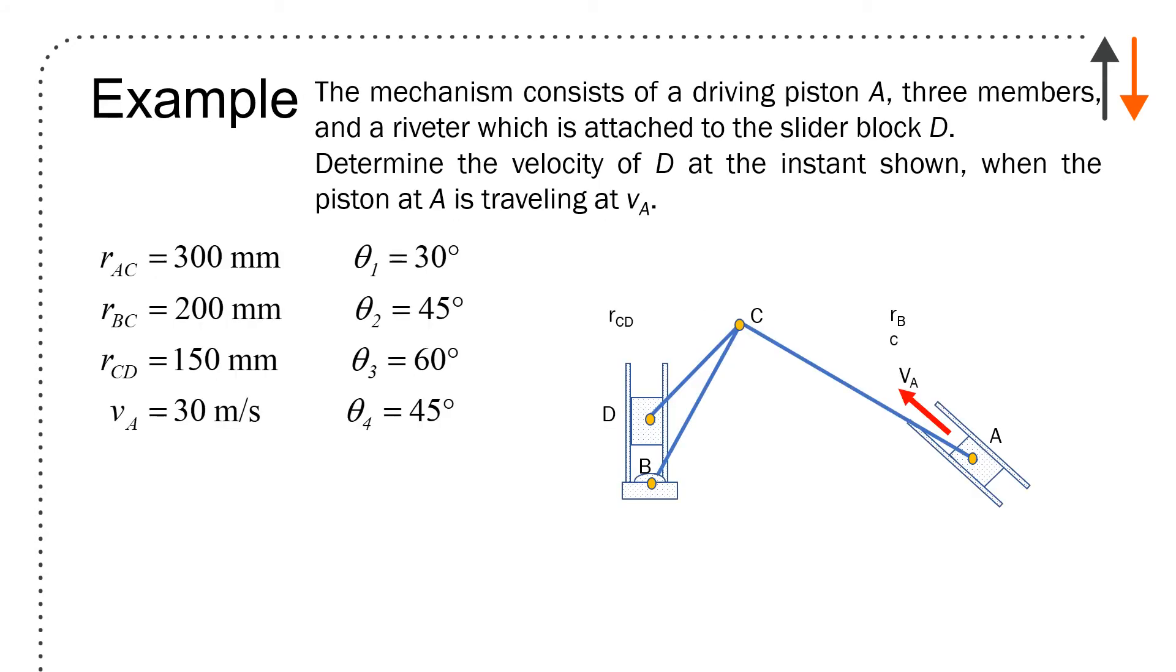This is a much more complex case. I have a mechanism consisting of a driving piston at A, three members, and a riveter which is attached to slider block D. Determine the velocity of D at the instant shown when the piston at A is traveling at VA. You're given RAC of 300 millimeters, RBC of 200 millimeters, RCD of 150 millimeters, velocity of A is 30 meters per second, and theta equals 30 degrees, 45 degrees, 60 degrees, and 45 degrees.